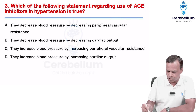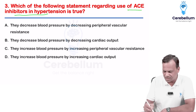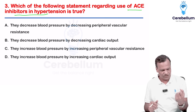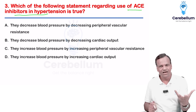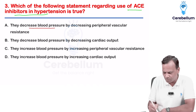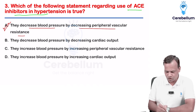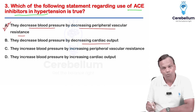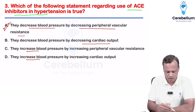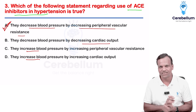Which is true regarding the use of ACE inhibitors in hypertension? ACE inhibitors are vasodilators — they cause vasodilation, which decreases peripheral vascular resistance, thereby decreasing blood pressure. They do not have a direct effect on cardiac output. The correct answer is: they decrease BP by decreasing peripheral vascular resistance.